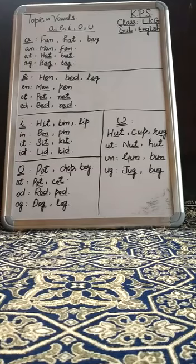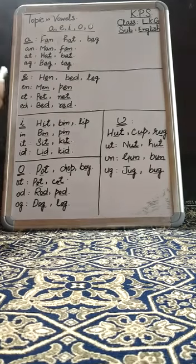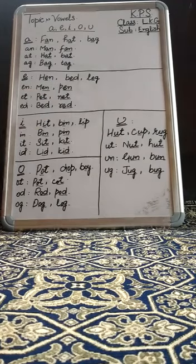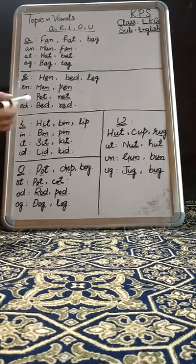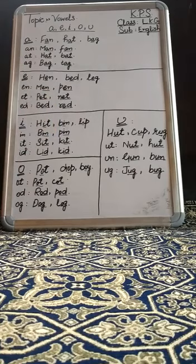Now let's learn a few combination sounds with the vowel E. First combination: -en. Its examples are Man and Pen. Second combination: -et. Its examples are Pet and Net. The third one is -end. Its examples are Belt and Red.